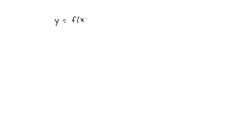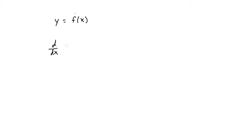Let's first talk about the notation of the derivative. If we have y equals some function f in terms of x, the derivative rules will be given in the form d over dx of what we're trying to take the derivative of — so in this case f of x. This notation says we're going to derive the function with respect to x.